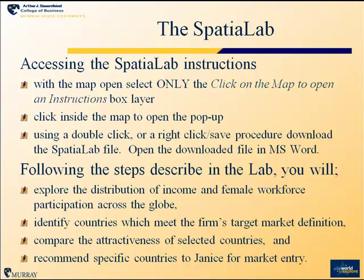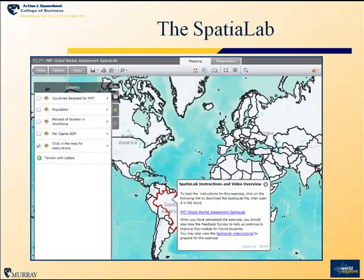To get to the Spatial Lab itself, you will open the map and then look at the layer with the instructions. Click on the map to open the instructions box layer. Once that is activated, you will click inside the map to open the pop-up, and use a double-click or right-click and save procedure to download the Spatial Lab file, which you will then be able to open in Microsoft Word. This visual shows you what that looks like in the map available on your screen. Notice that there is also a link to this video tutorial as part of that pop-up as well.